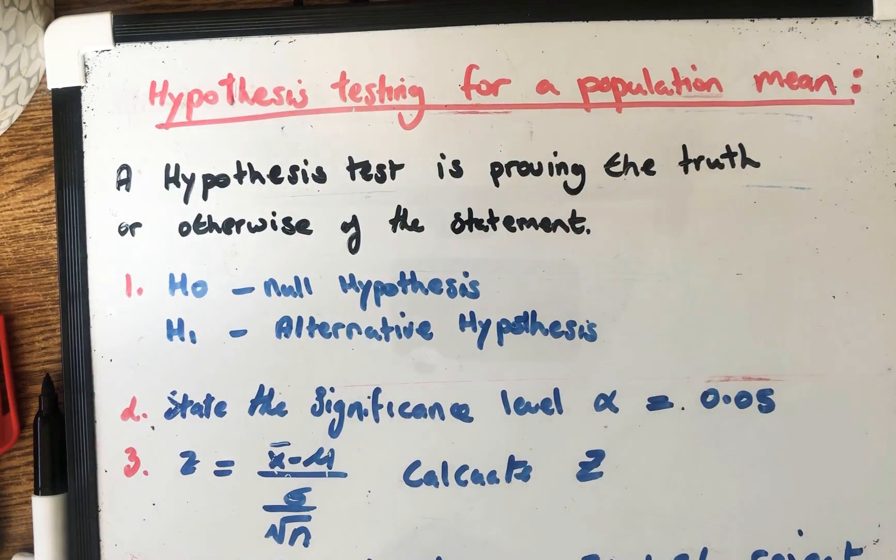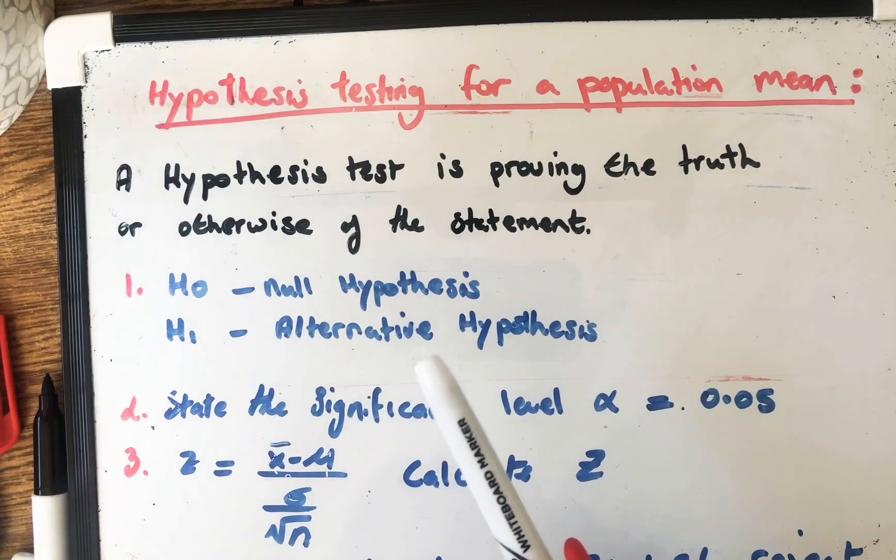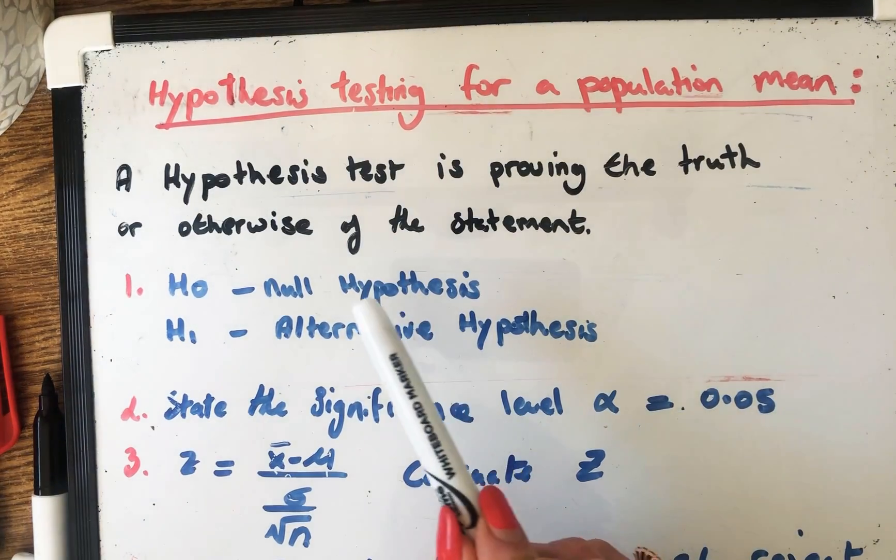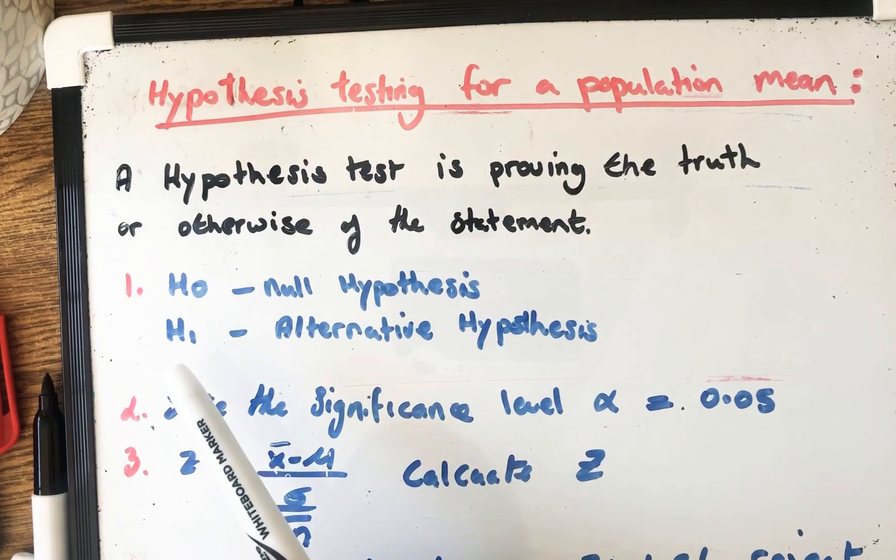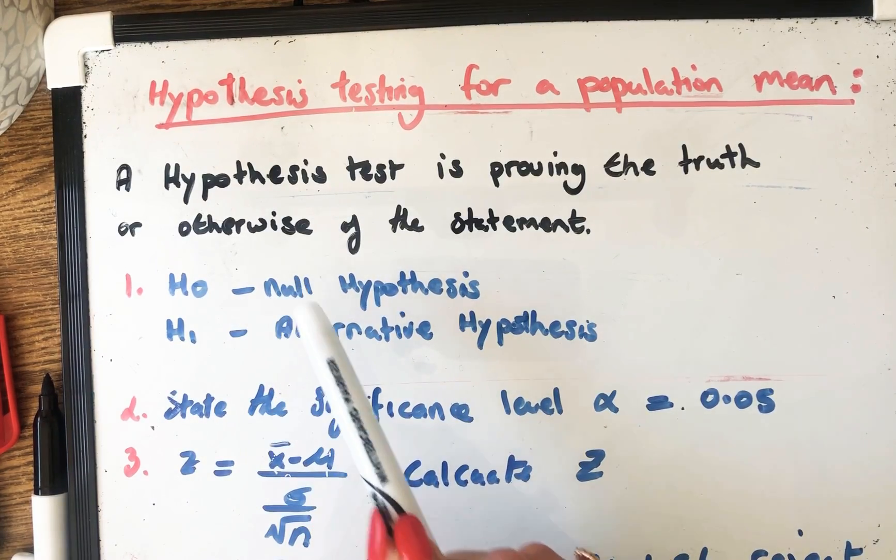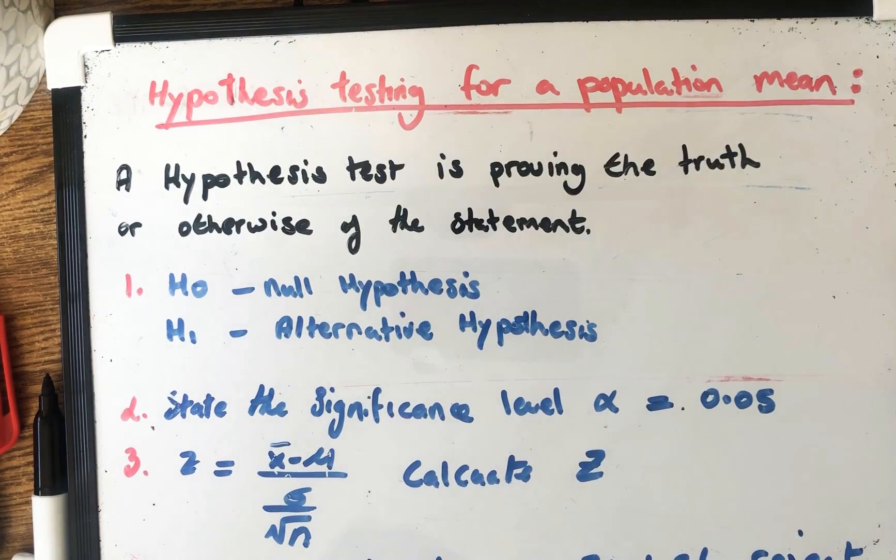So there are four steps involved in a hypothesis test for a population mean and I have them labelled here and we're going to go through them. You begin by stating what is your null hypothesis and your alternative hypothesis. These will be brand new words to you but in the exam you don't really write down the English format, we write down H0 and H1. So they're both statements and they're sentences.